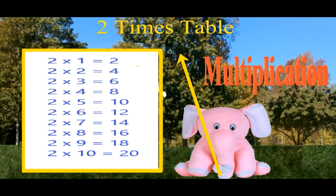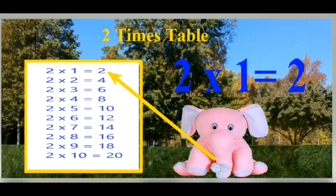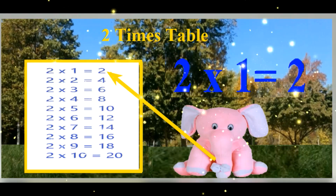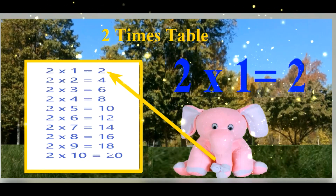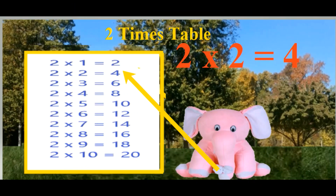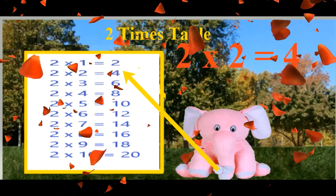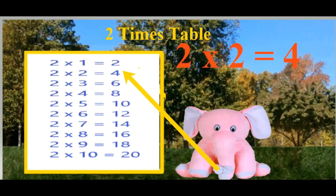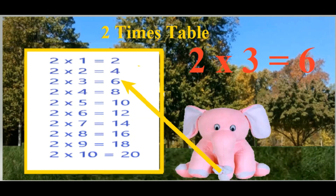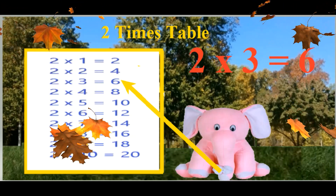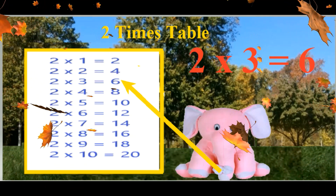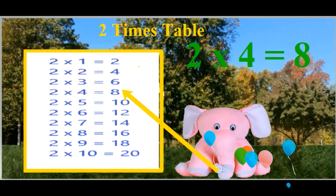Two table. Two ones are two. Two twos are four. Two threes are six. Two fours are eight.